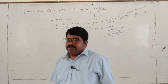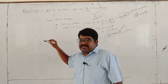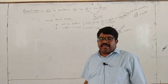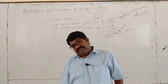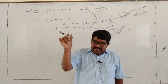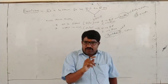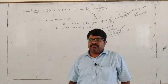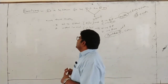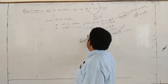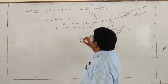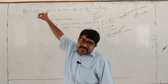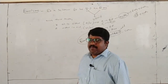An emulsifying agent is a third substance added to emulsions for stabilization. For example, casein is added to milk to convert it into curd — casein is the emulsifying agent. The third substance added to emulsions as a stabilizer is called an emulsifying agent.